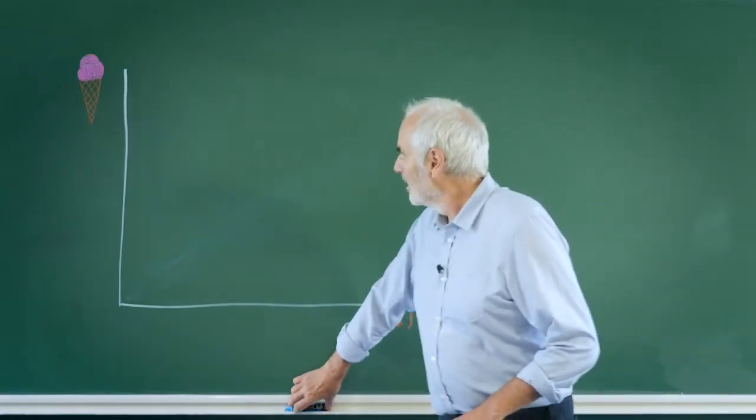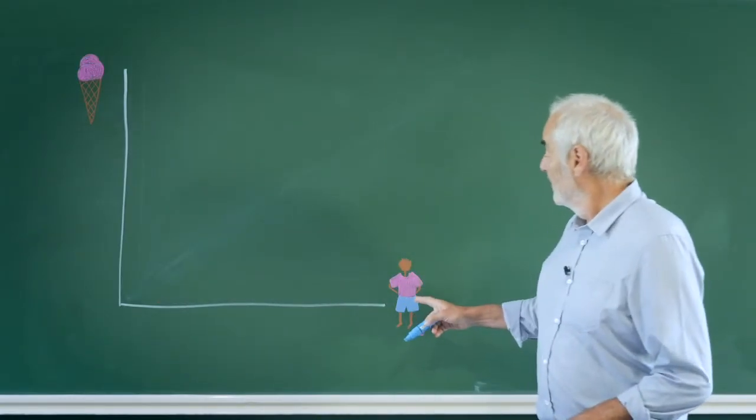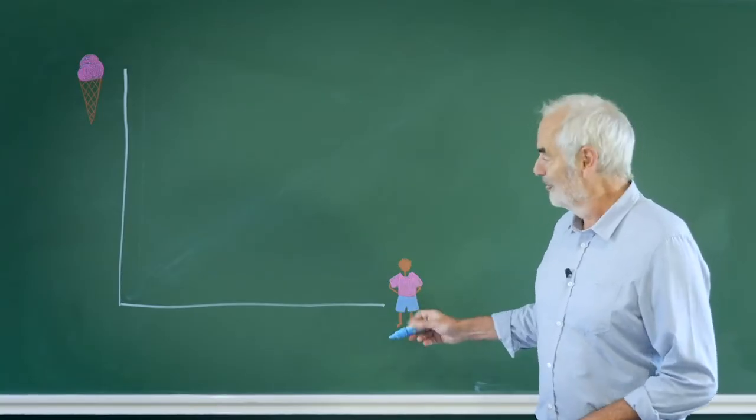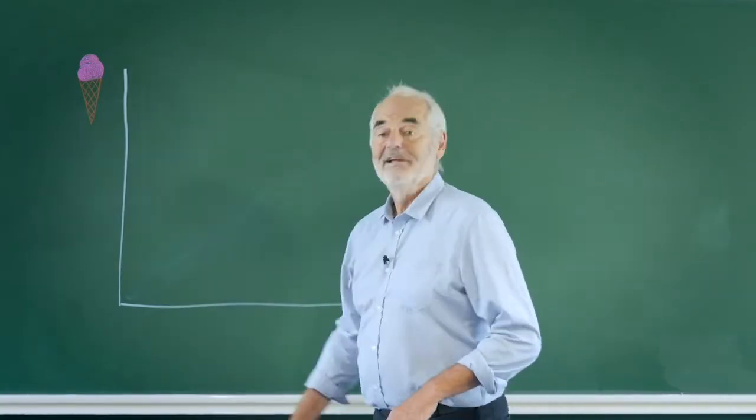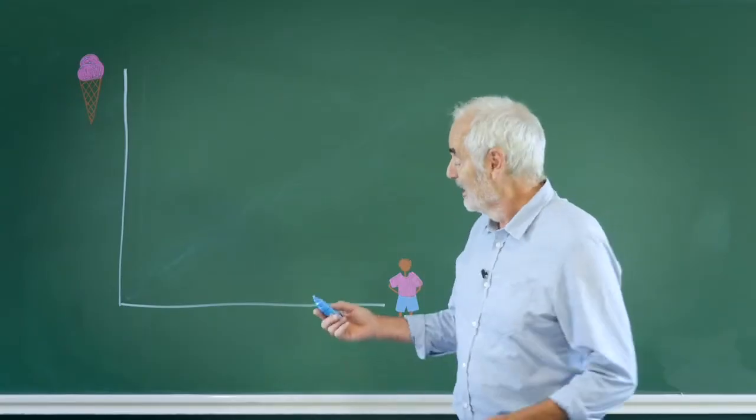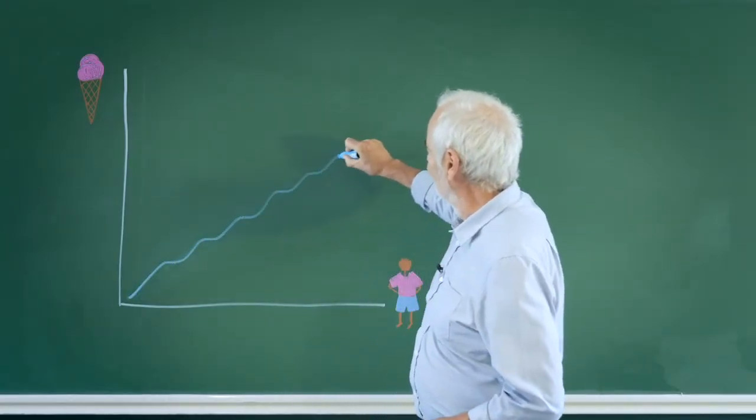Let's look at this graph. Now along here we've got the number of people wearing shorts and up here we've got the amount of ice cream being sold and we observe this strong relationship.